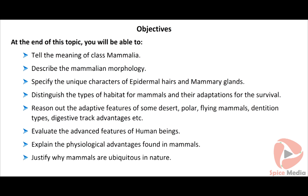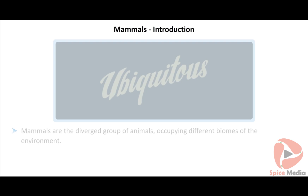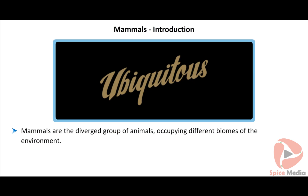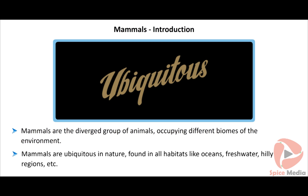Mammals are the diverged group of animals occupying different biomes of the environment and amazingly fitting themselves in their habitats. Mammals are ubiquitous in nature, found in all habitats like oceans, freshwater, hilly regions, forests, deserts, polar regions and swamps.